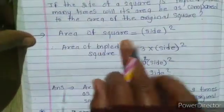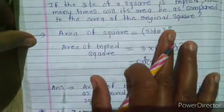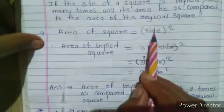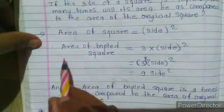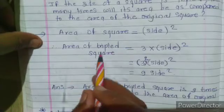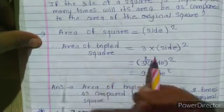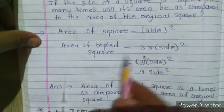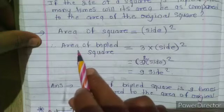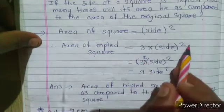Area of a square is equal to side squared. That is the formula. The area of the tripled square: if the sides are tripled, then the new side is 3 times the original side.